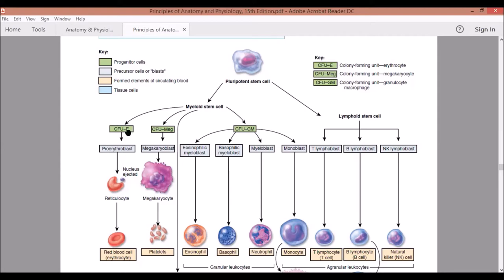For your colony forming units for your erythrocytes, it will give rise to your red blood cells. Red blood cells are the cells in your blood that contain hemoglobin, which will hold oxygen and deliver that oxygen to the different tissues.